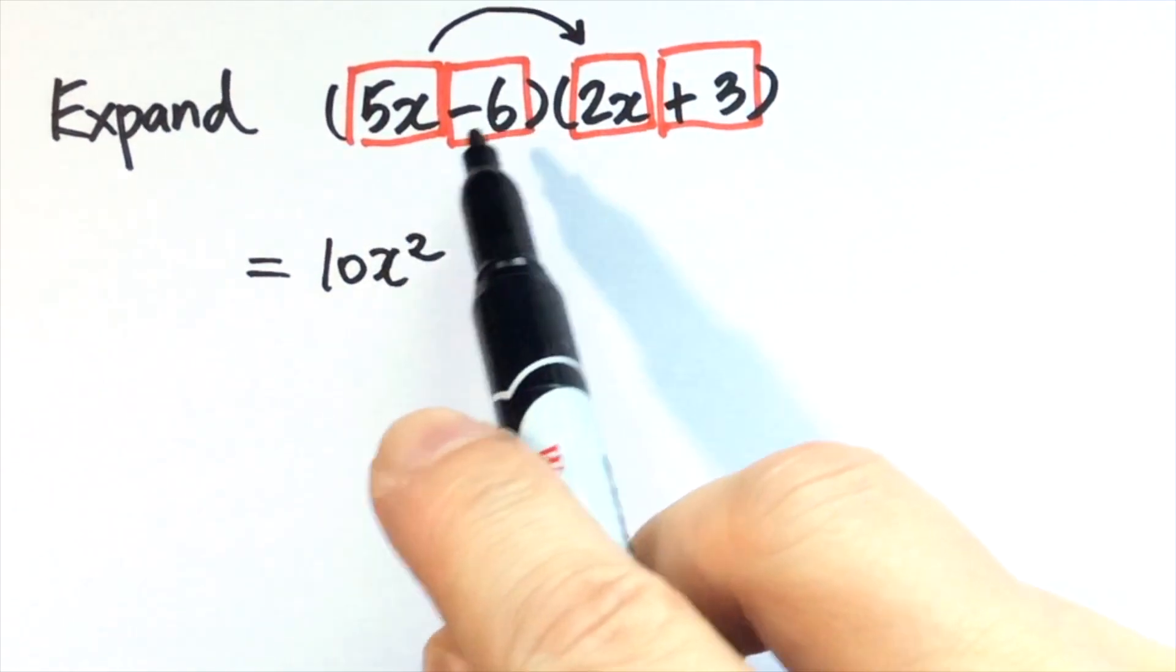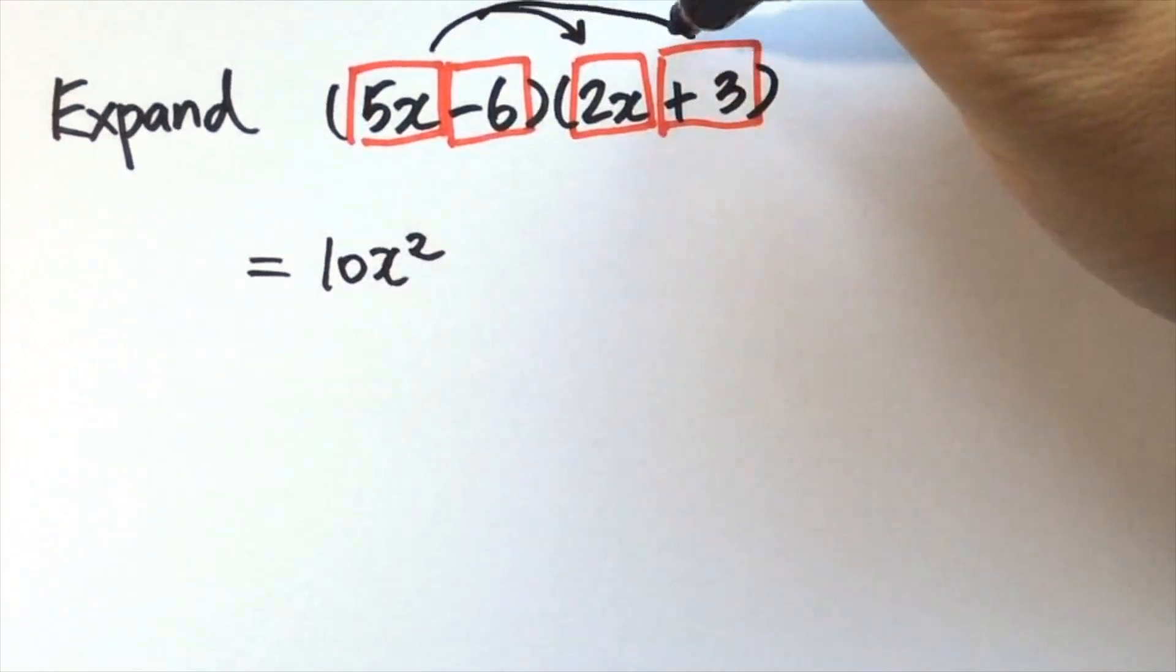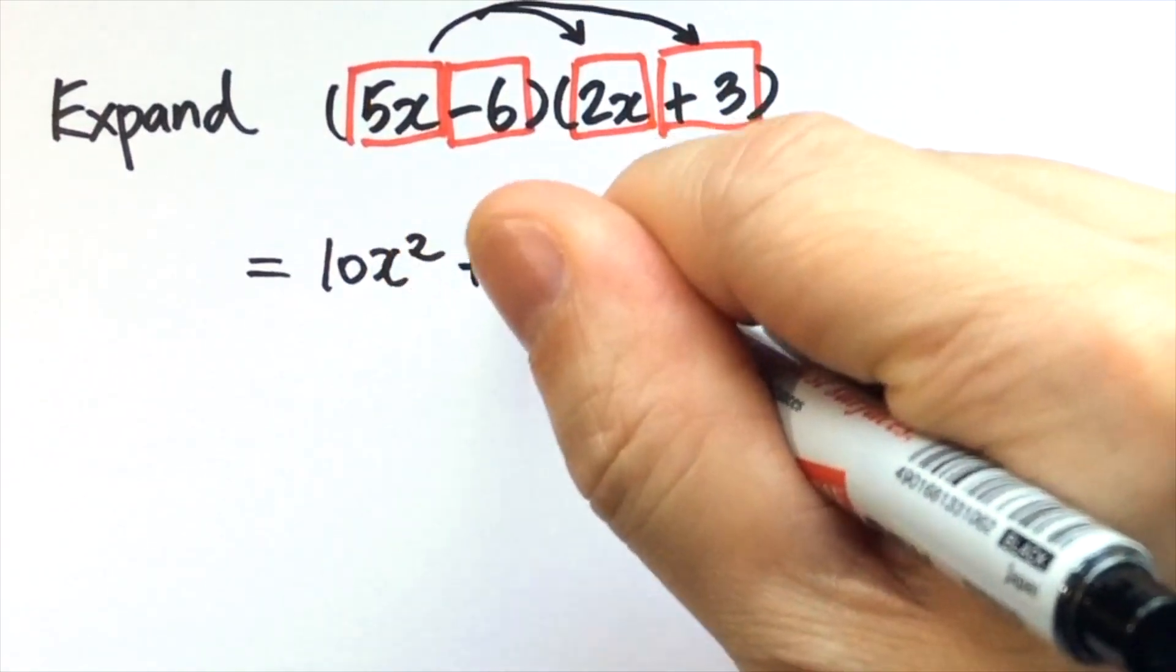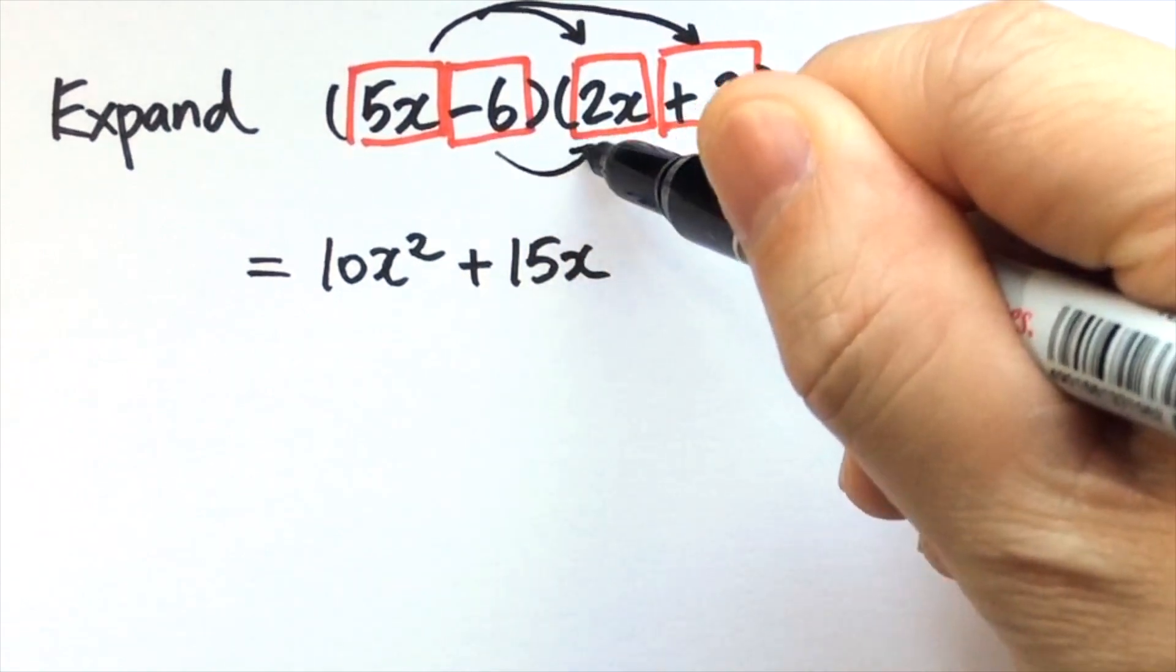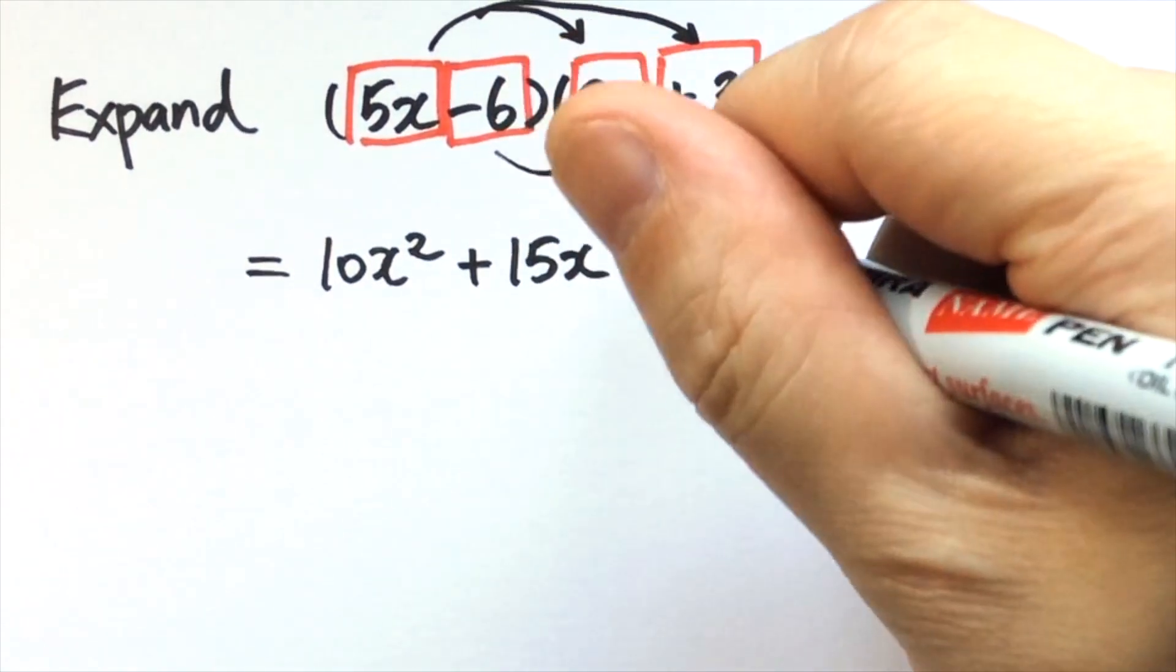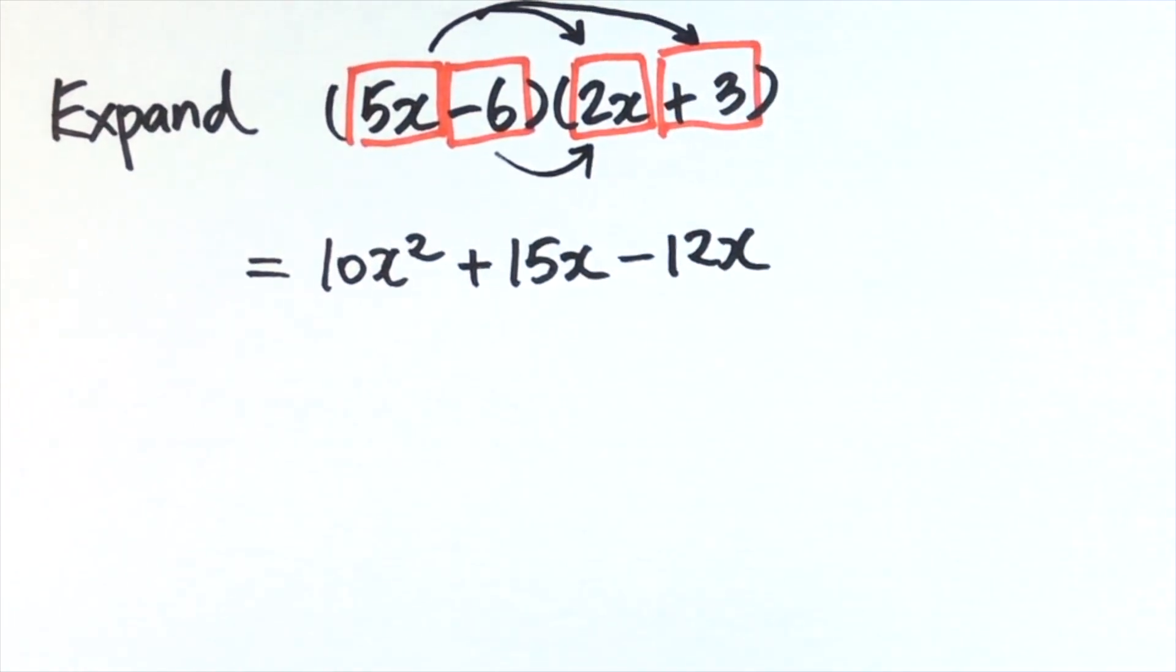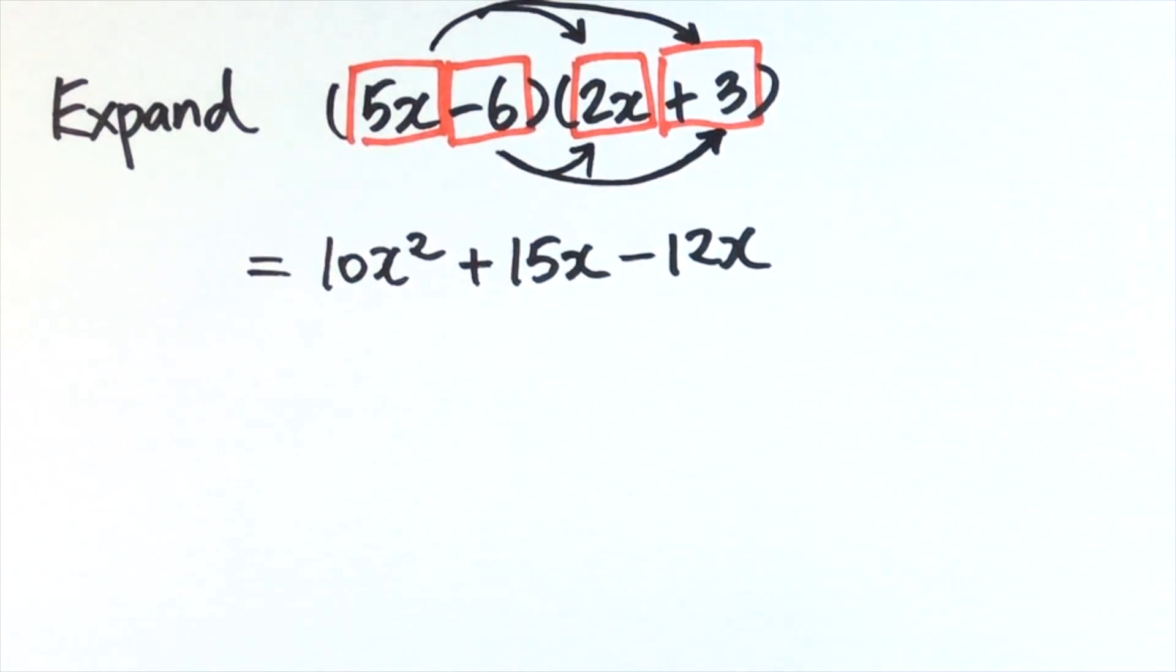We can do the multiplication in our mind to save time. Second one: 5x times plus 3 gives positive 15x. Then negative 6 times 2x gives negative 12x, and finally negative 6 times plus 3 gives negative 18.